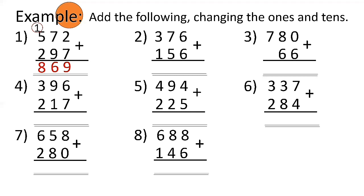Number 2: 376 plus 156 — 6 plus 6 is 12, bring down 2, carry 1 to the tens place. 7 plus 5 is 12, plus 1 is 13, bring down 3, carry 1 to the hundreds place.